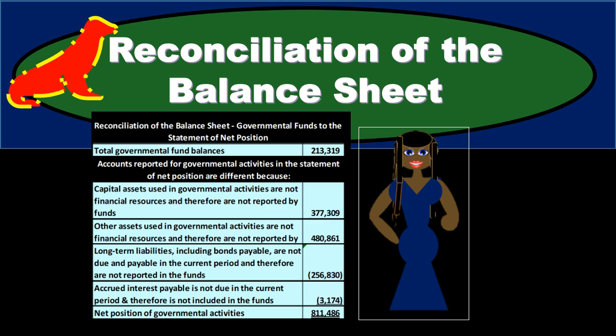We want to think about this as basically the set of books happening on two different levels: the government-wide level and the fund level. The primary difference being that the government-wide activity is going to be on an accrual basis, while the governmental fund activity is on a modified accrual basis.